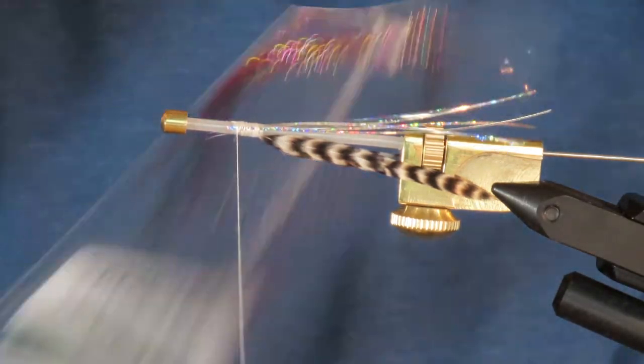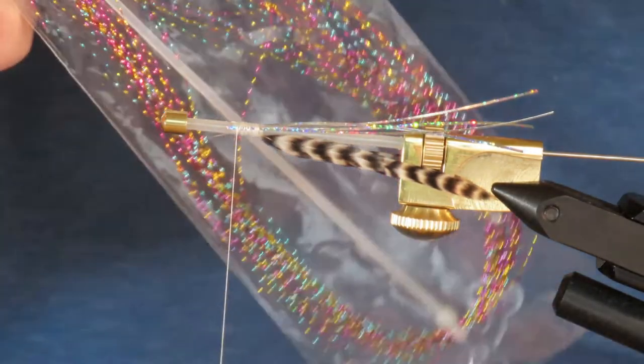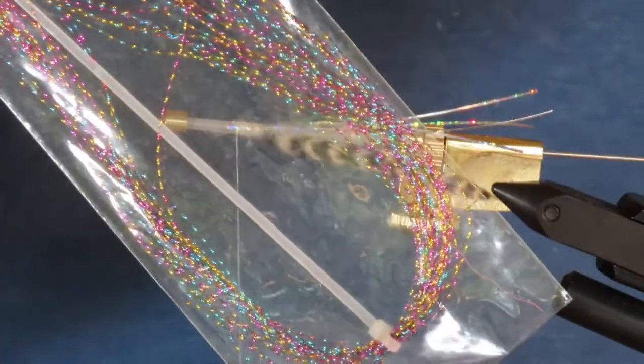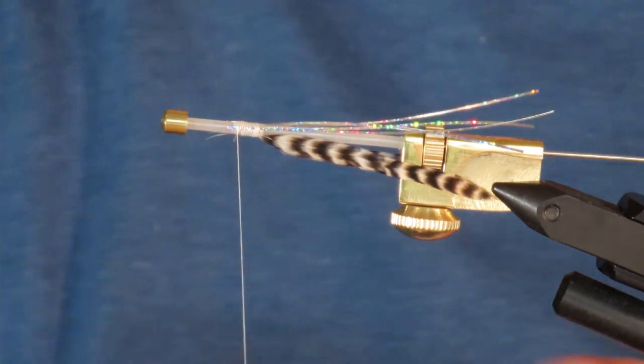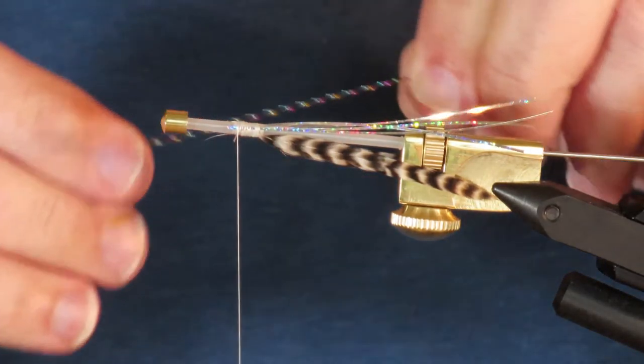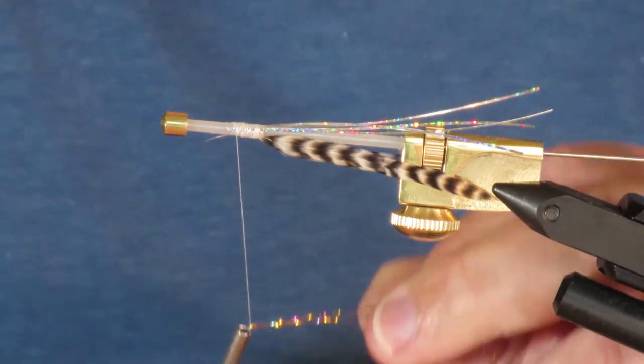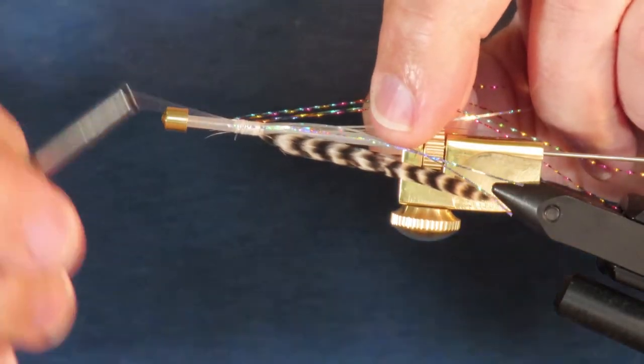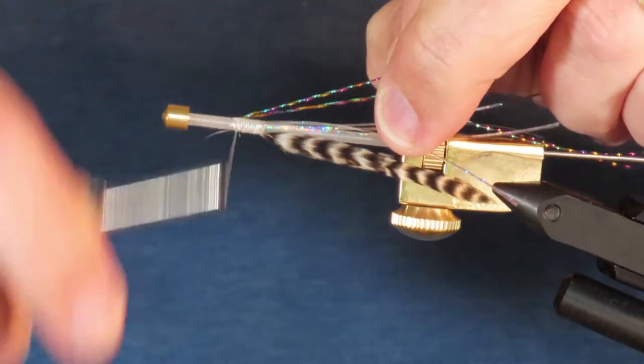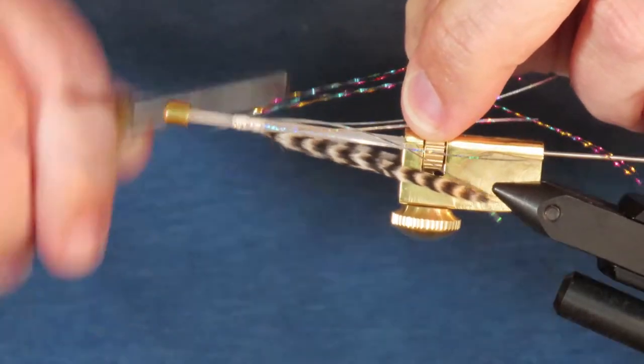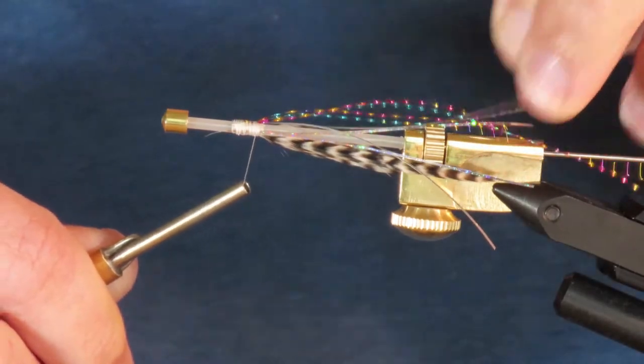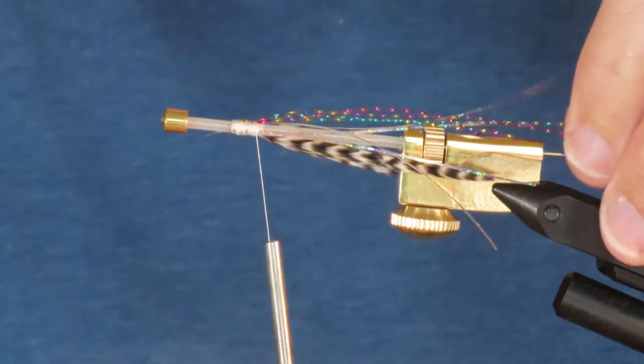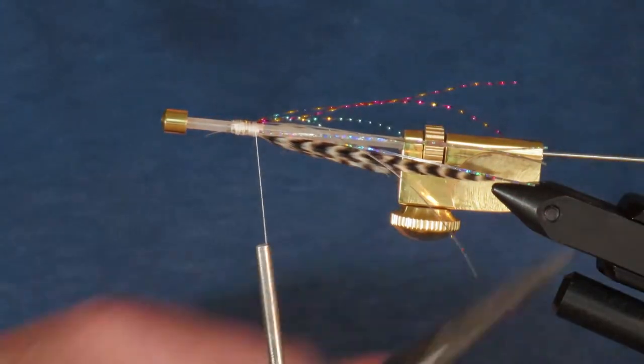Next I'm going to add a few strands of crystal flash. This is the multicolored variety where the color varies along the length of a single strand. I'm going to wrap two pieces of that around my tying thread, and then bring it up around to the top of the tube before tying it down. And I'll trim that to the length of the flashaboo.